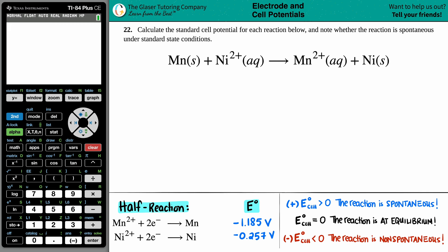Number 22. Calculate the standard cell potential for each reaction below and note whether the reaction is spontaneous under standard state conditions.